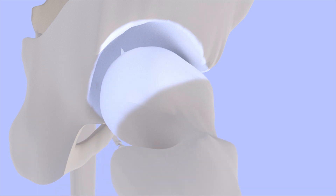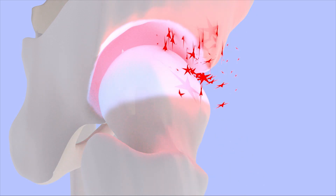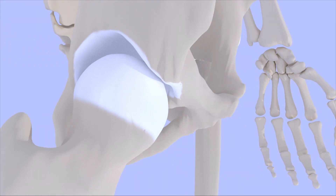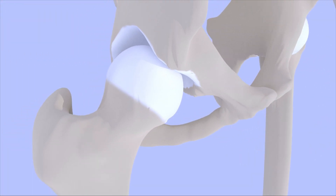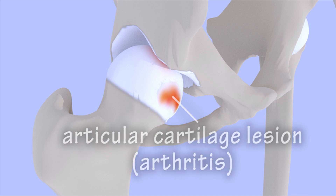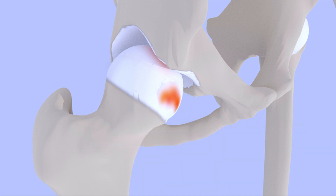Whether the impingement is caused by a CAM lesion, pincer lesion, or both, pain begins to occur in the groin and sometimes on the side of the hip along the joint line. Sharp pain may occur in positions that cause the impingement, such as with turning, twisting, or sitting. Over time, damage occurs to the articular cartilage and labrum. As the joint becomes arthritic, pain may become more constant and dull.